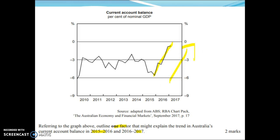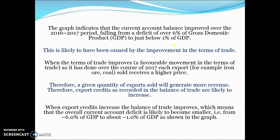First you need to state what's happening: it's a decrease in the current account deficit. We're below zero so it's a deficit, and that amount is decreasing — it's gone from around negative 5.8% to around negative 1.8%. Then explain a factor that may have caused this. The graph indicates that the current account balance has improved; the deficit has fallen from around 6% of GDP to just below 1% of GDP.